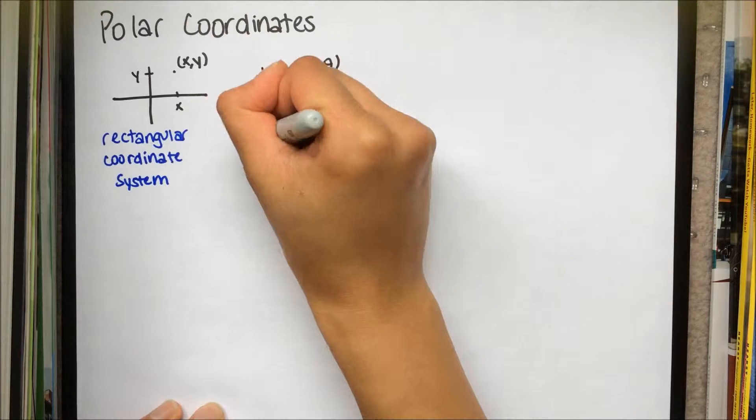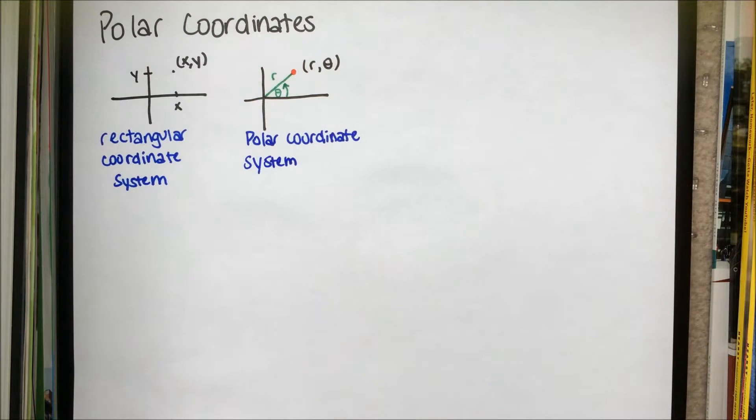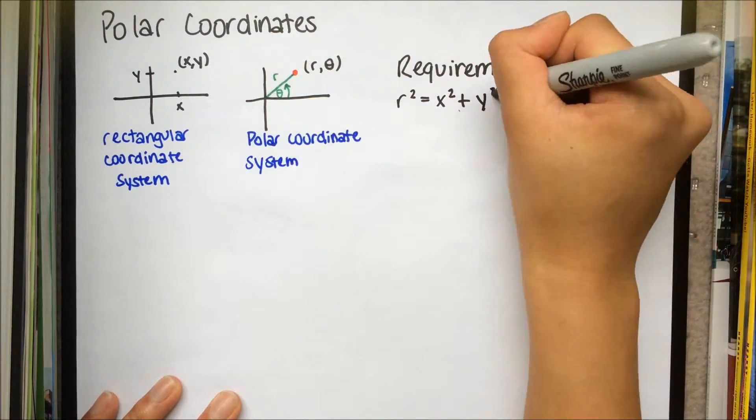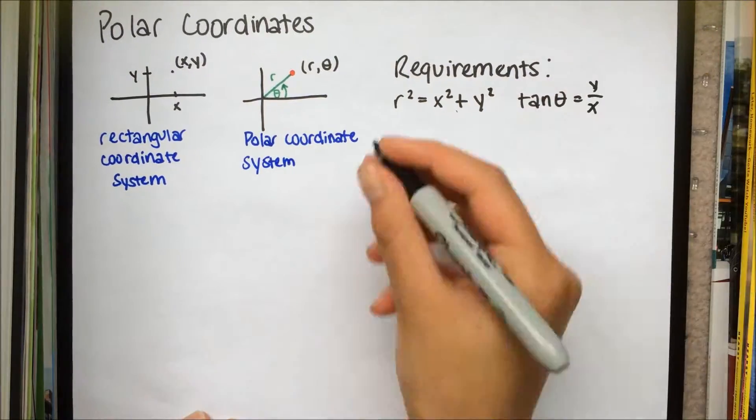Each polar coordinate must satisfy both of the following requirements. R squared is equal to x squared plus y squared, and tan theta is equal to y over x.